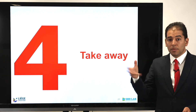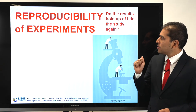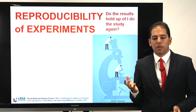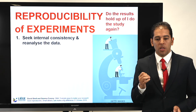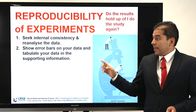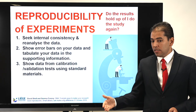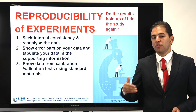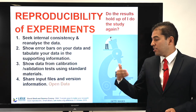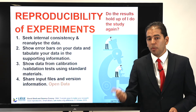This is the end of today's presentation. Some takeaway messages about reproducibility of experimental research: when we do experimental research, we need always to ask ourselves, do the results hold up if I do this study again? First, seek internal consistency and reanalyze your data. Show error bars on your data and tabulate your data in the supporting information. Show data from calibration and validation tests using standard materials. Don't forget to cite any reference, protocol, or standard that you use to conduct your experiment. Share the input files and the version of information you used. Share the software used for the analysis and publish open data if possible.